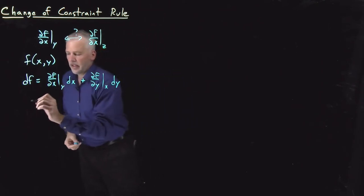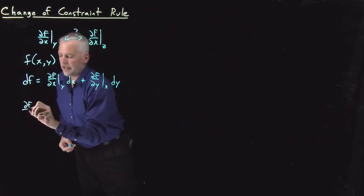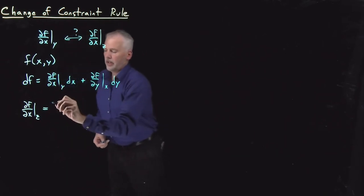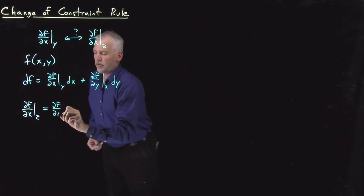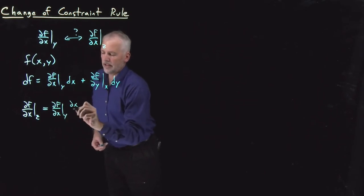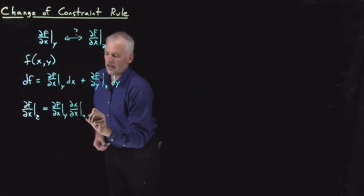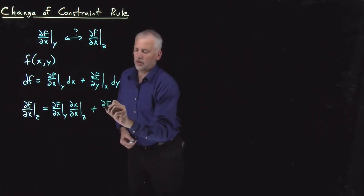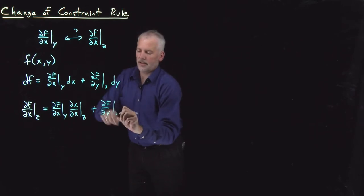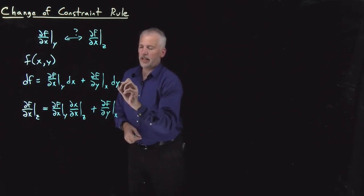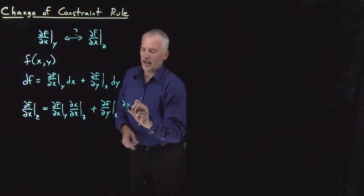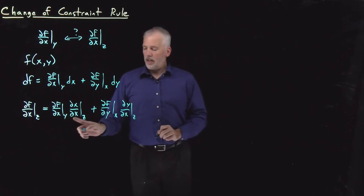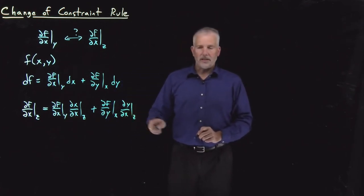So I'll say ∂f/∂x at constant z is equal to the ∂f/∂x at constant y that was already here, and now the dx becomes dx/dx at constant z. The second term looks like the ∂f/∂y at constant x that was already here, and now the dy becomes dy/dx at constant z. So here, here, and here, I've taken 1 over dx at constant z.